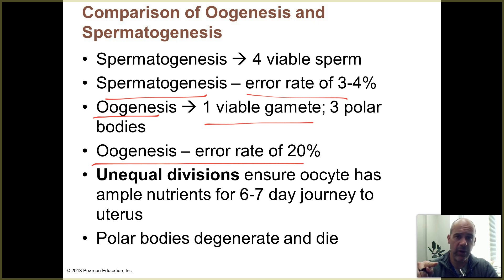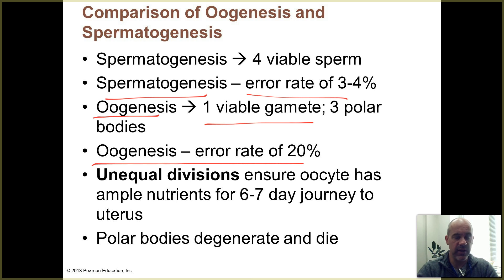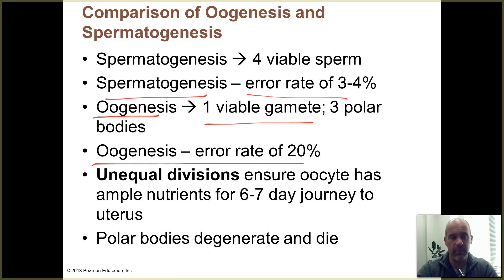Down syndrome can occur because a sperm had two copies of chromosome 21 instead of one, or because the ovum had two copies instead of one. Usually when trisomy happens with other chromosomes — for example, three copies of chromosome 15 — the developing embryo is not viable and won't survive, because you don't have the correct amount of those genetic recipes needed to function.